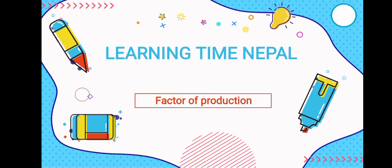Hello students, welcome to Learning Time Nepal. Today we are going to cover Class 9 Economics Chapter 4, Factor of Production. We have Unit 1, Unit 2, and Unit 3 already uploaded, with links in the description box. Today we are going to talk about factor of production.